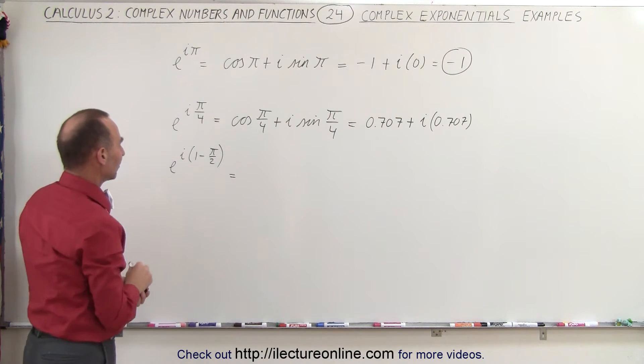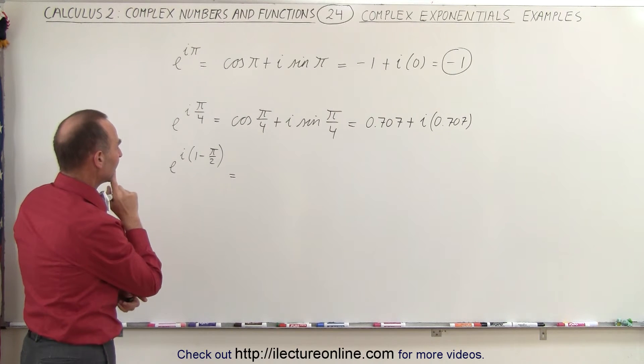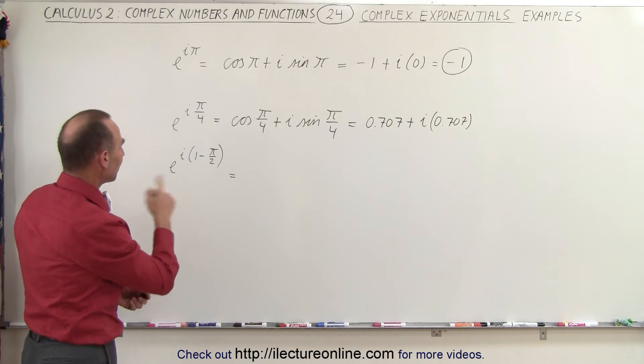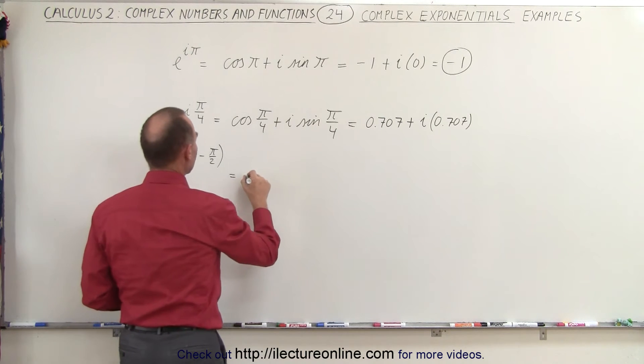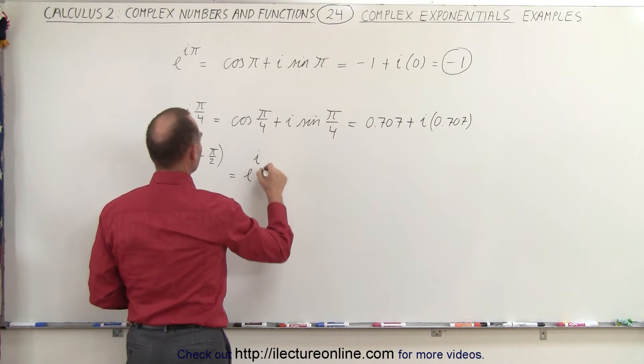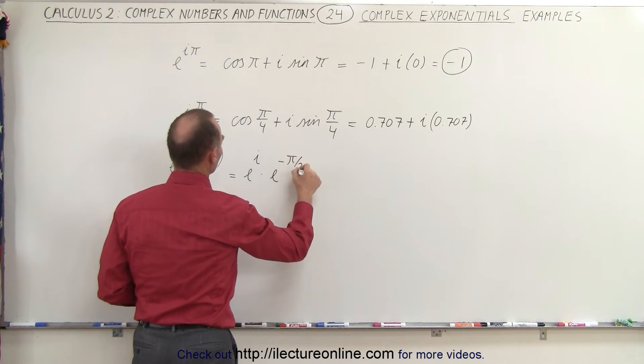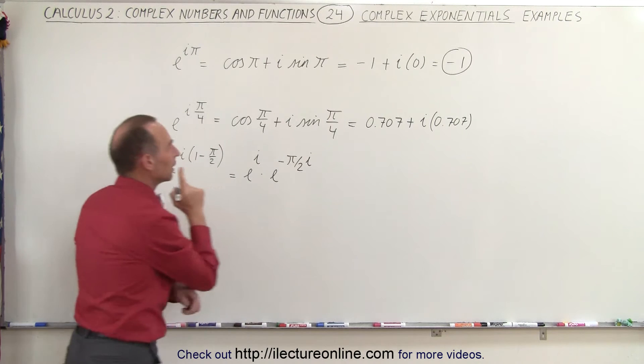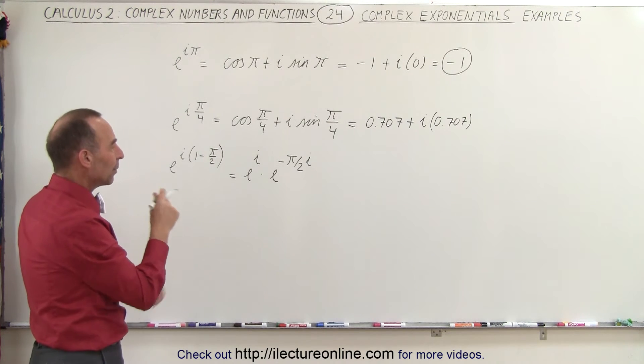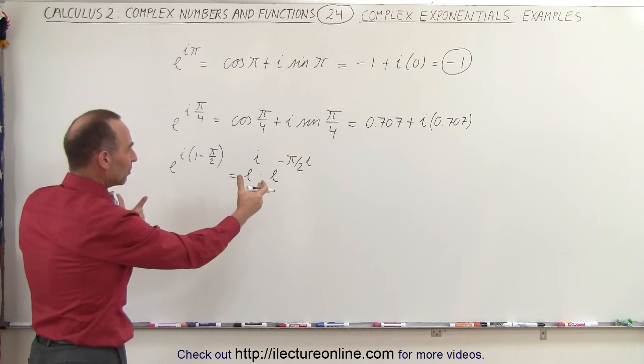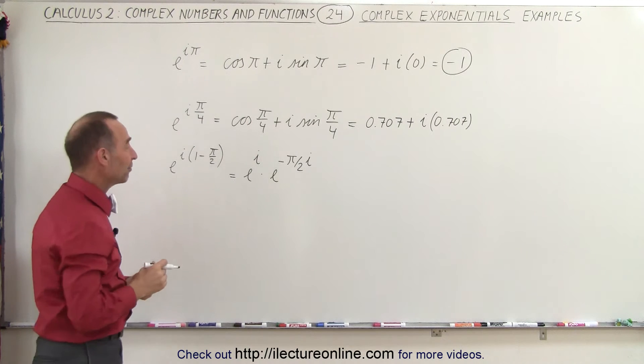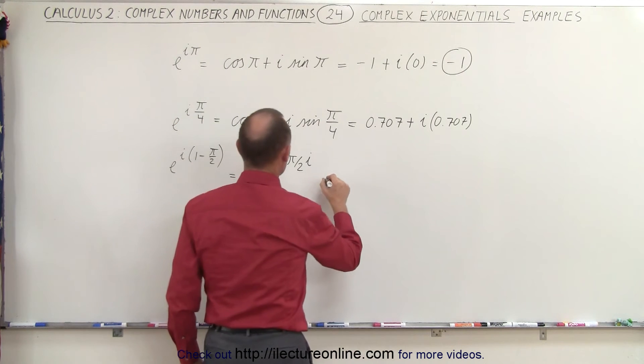And what if we have something like this? Well, let's see here. We can separate those two. We can write this as e to the i times e to the minus pi over two times i. Okay, if we do that, then we can expand both of them and then multiply them afterwards. So this can be written as,